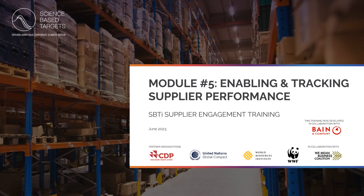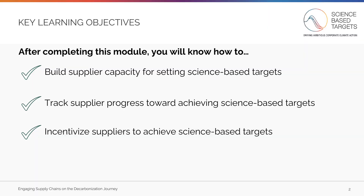Hello, and welcome to the SBTi's training on supplier engagement. This session covers module number five, Enabling and Tracking Supplier Performance. After completing this module, you will know how to: first, build supplier capacity for setting science-based targets; second, track supplier progress towards achieving science-based targets; and lastly, incentivize suppliers to achieve science-based targets.